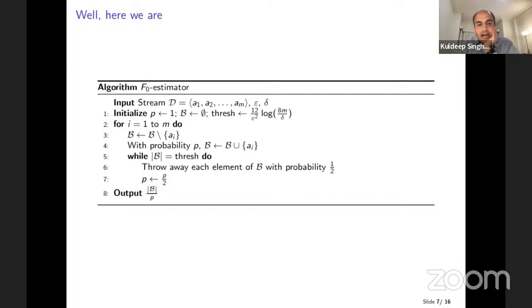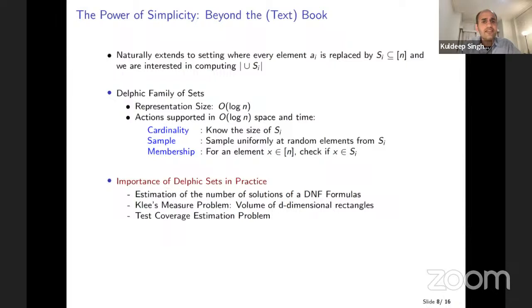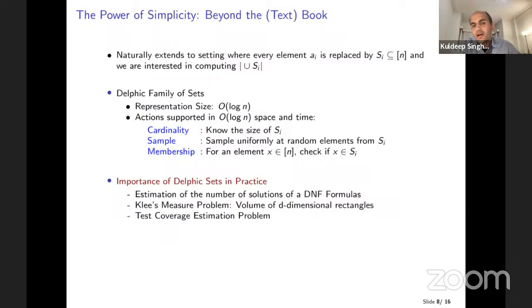One strong motivation was to get an algorithm that doesn't rely on hash functions and is very simple to explain and implement. But simple things have much more power — they also generalize. It turns out the algorithm generalizes to a setting where instead of having a single element, we could have a set come in the stream, and we're interested in computing the union of these sets.